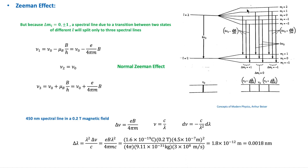These are the different energy states resulting from placing the atom in an external magnetic field. Because changes in ML are restricted to 0 or plus or minus one, a spectral line due to a transition between two states of different L will split into only three spectral lines — one original spectral line splits into three when the atom is placed in an external magnetic field. This is known as the normal Zeeman effect.